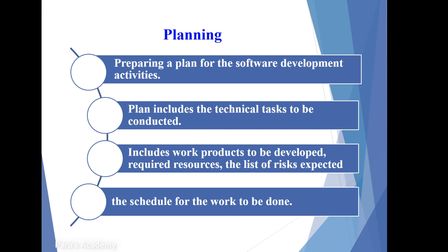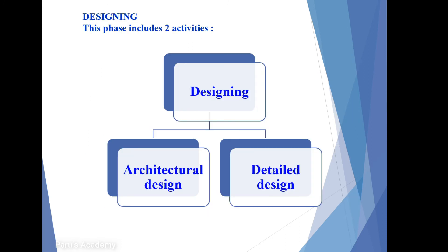The plan includes work products to be developed, required resources, and the list of expected risks. Work products refer to all the products used for the work. Required resources covers everything we need. Risk management identifies all the risks we will face. The schedule for all the work to be done — what processes, how they will be performed — is also defined in planning.